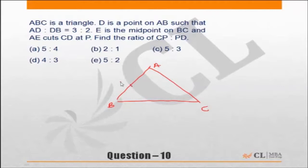Let's say D is this point with ratio 3:2. E is the midpoint on BC, meaning the ratio is 1:1, and AE cuts CD at P.